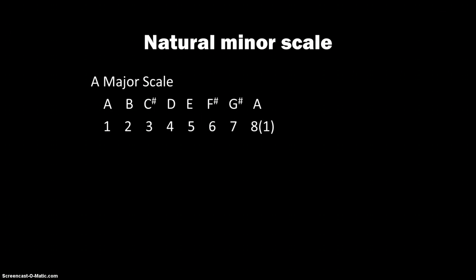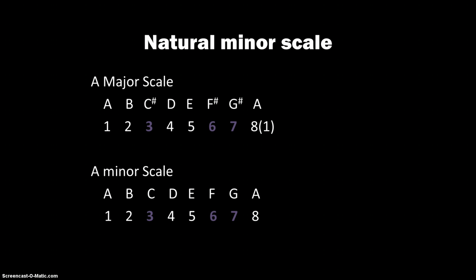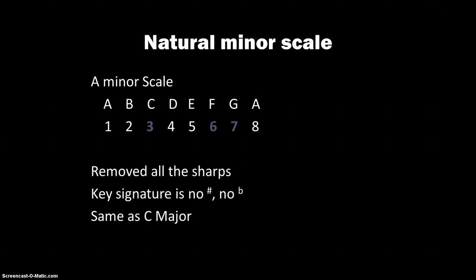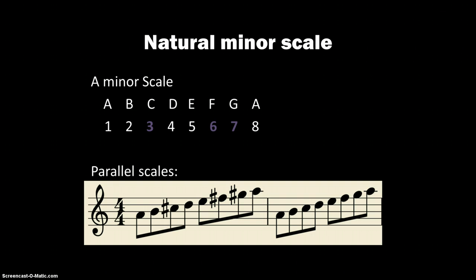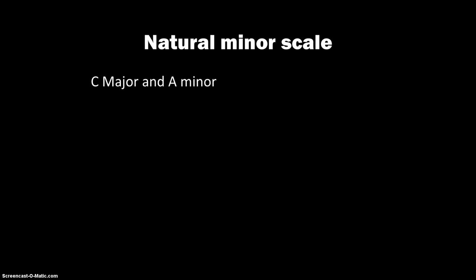Let's take a look at another example. The A major scale has three sharps — F, C, and G — because the first three sharps are always F, C, and G. If we target the third, sixth, and seventh notes of that scale, we notice that the three notes targeted are the three sharp notes. Since we lower those by a half step to get the natural minor scale, the A minor scale has no sharps and no flats — all white keys, just like C major.